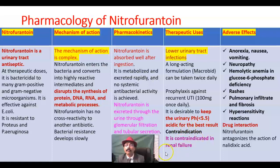Contraindication of nitrofurantoin: it is contraindicated in renal failure. Adverse effects include anorexia, nausea, vomiting, neuropathy, and hemolytic anemia in glucose-6-phosphate dehydrogenase deficiency.